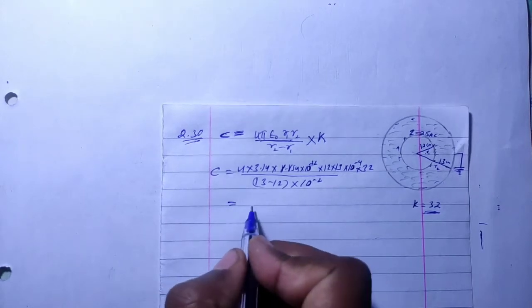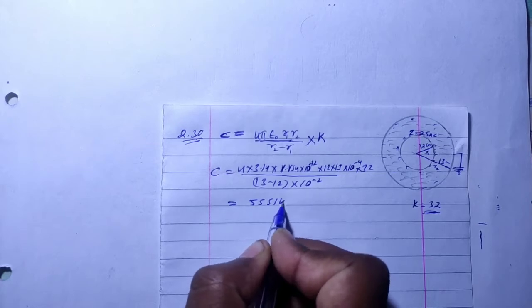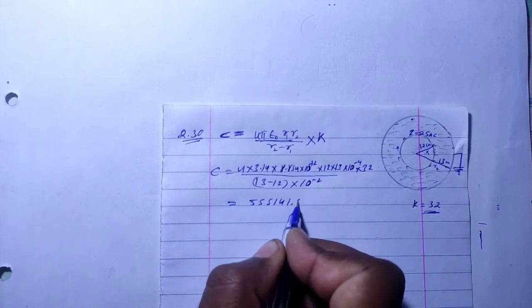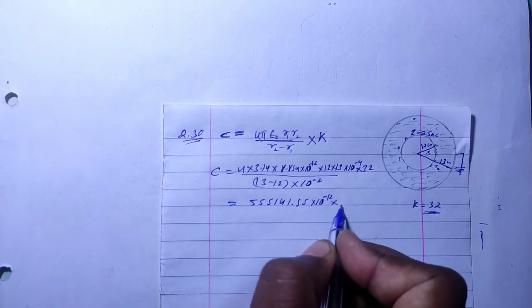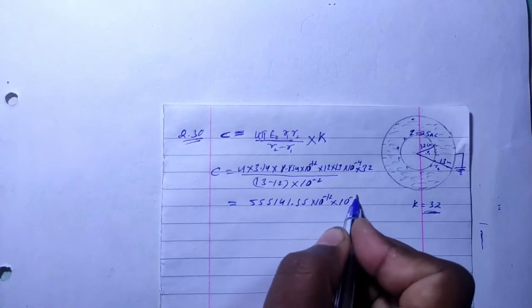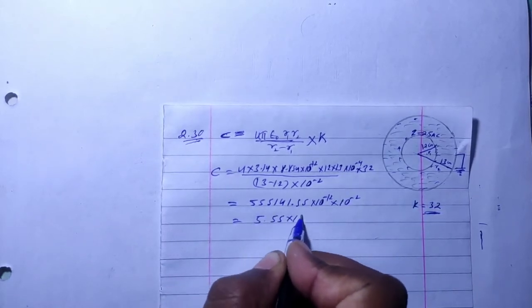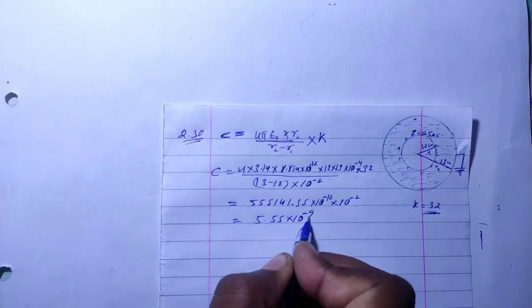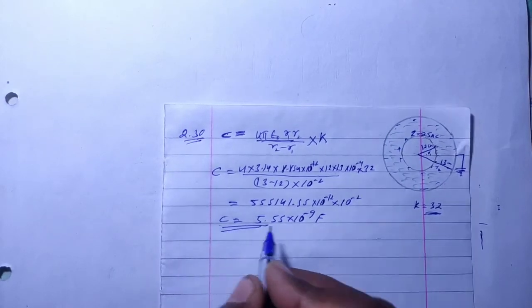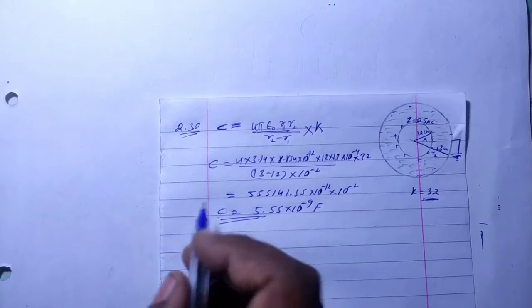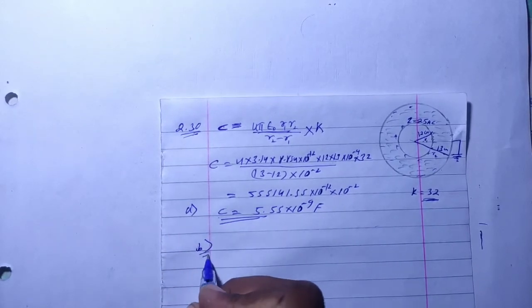Solving this, it comes out to 5.55 × 10⁻⁹ farads. This completes part A — the capacitance of the spherical capacitor.